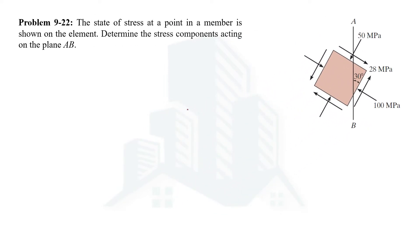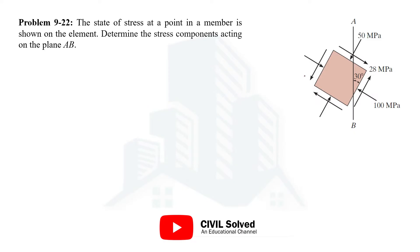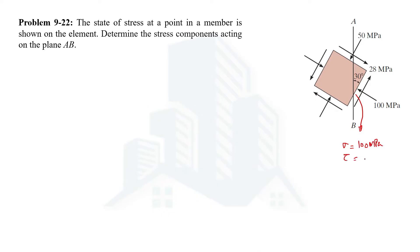In order to solve this problem with the help of Mohr's circle, first of all we should know the state of stress at different planes. At this plane, the normal stress is 100 MPa and the shear stress is 28 MPa. This 100 MPa is compressive stress and we take compressive stress as negative, so negative 100 MPa. The 28 MPa shear stress is anti-clockwise, and taking anti-clockwise as negative, so negative 28 MPa.